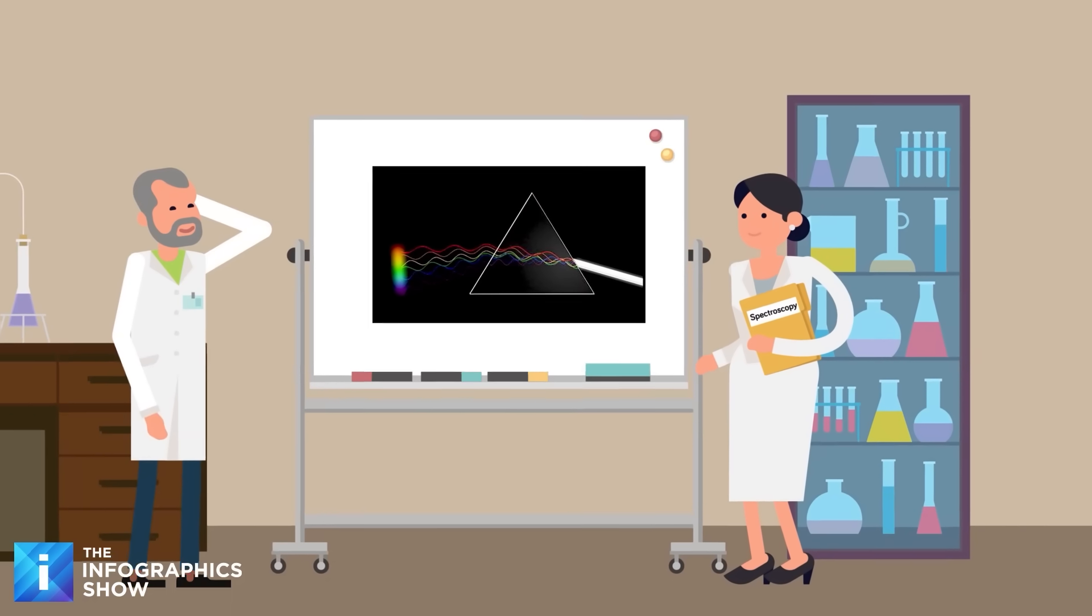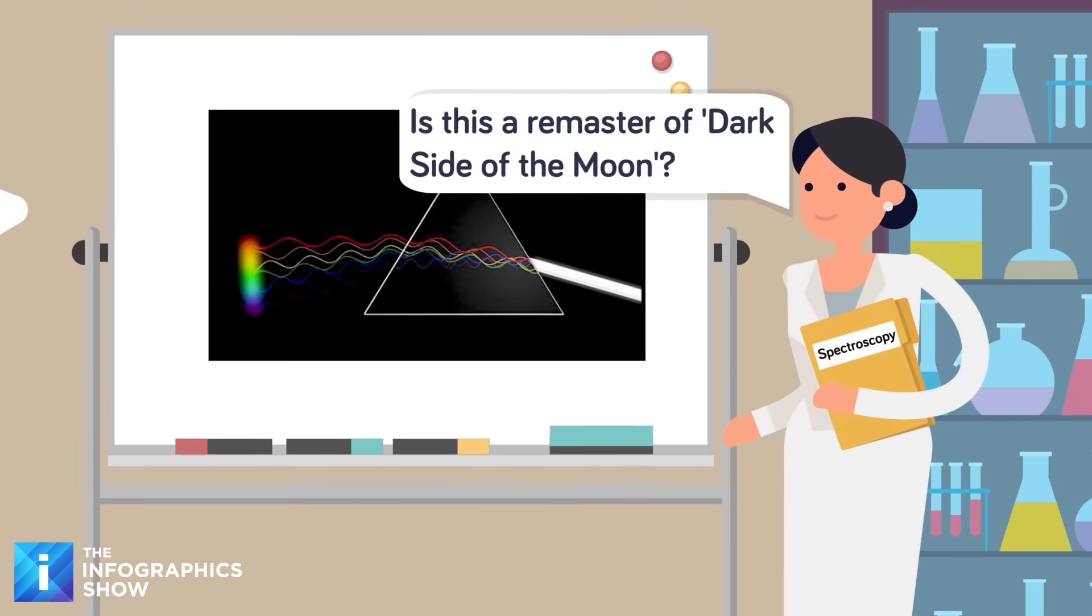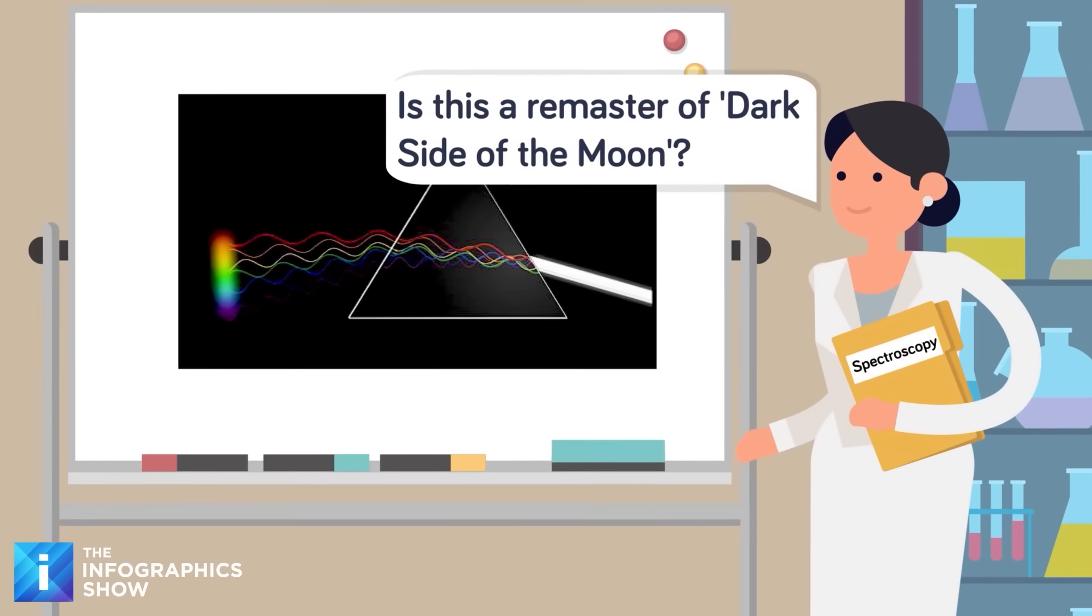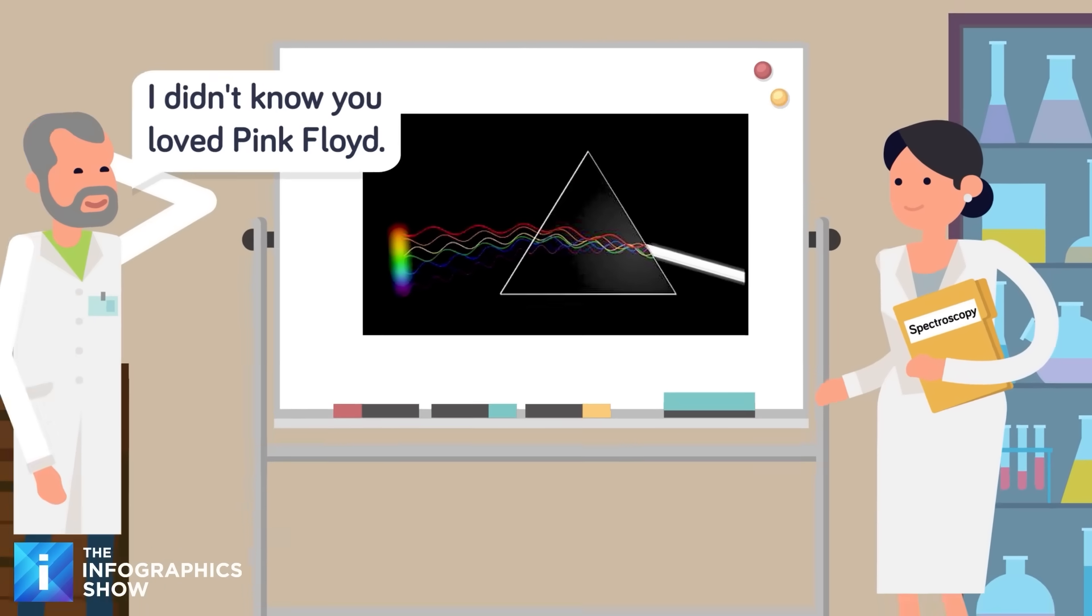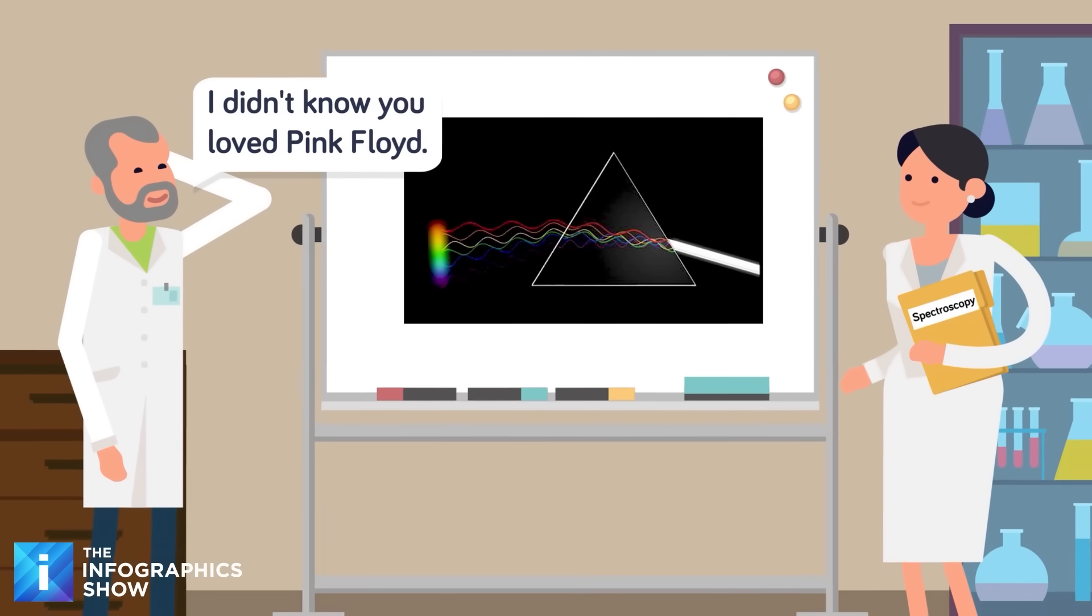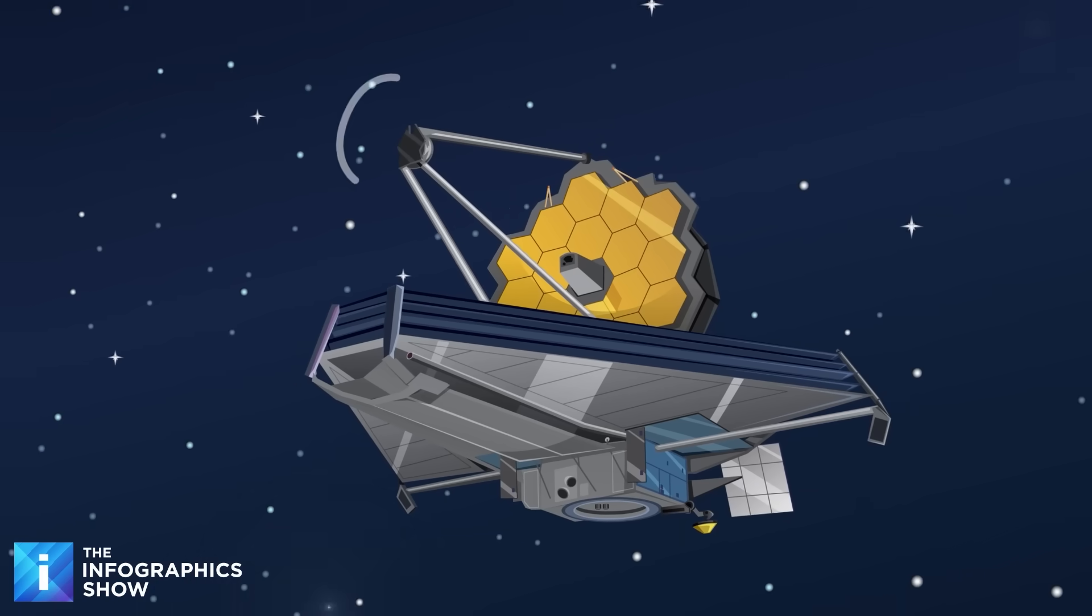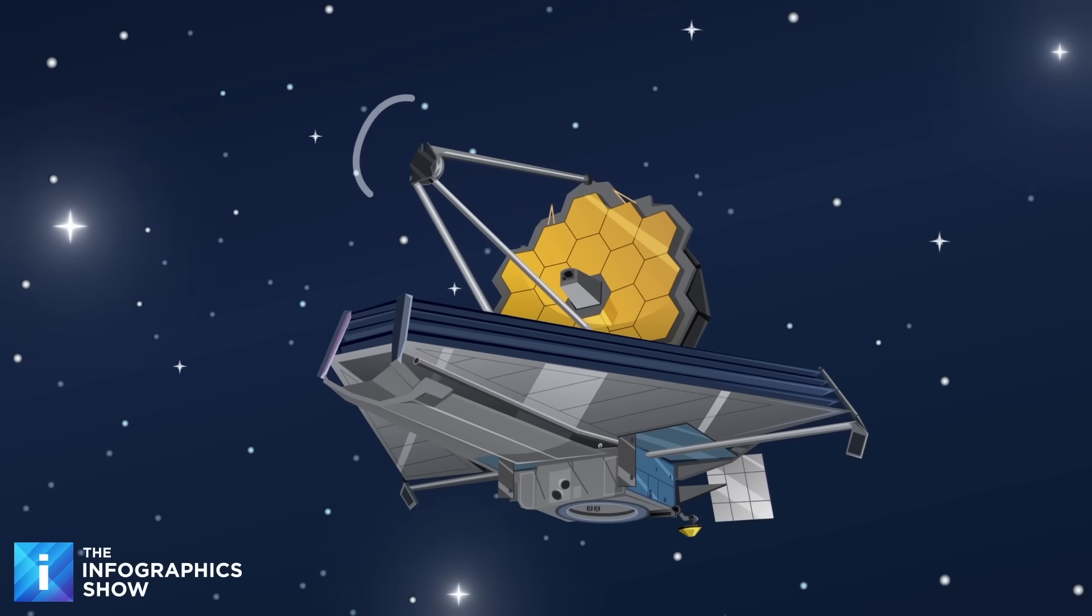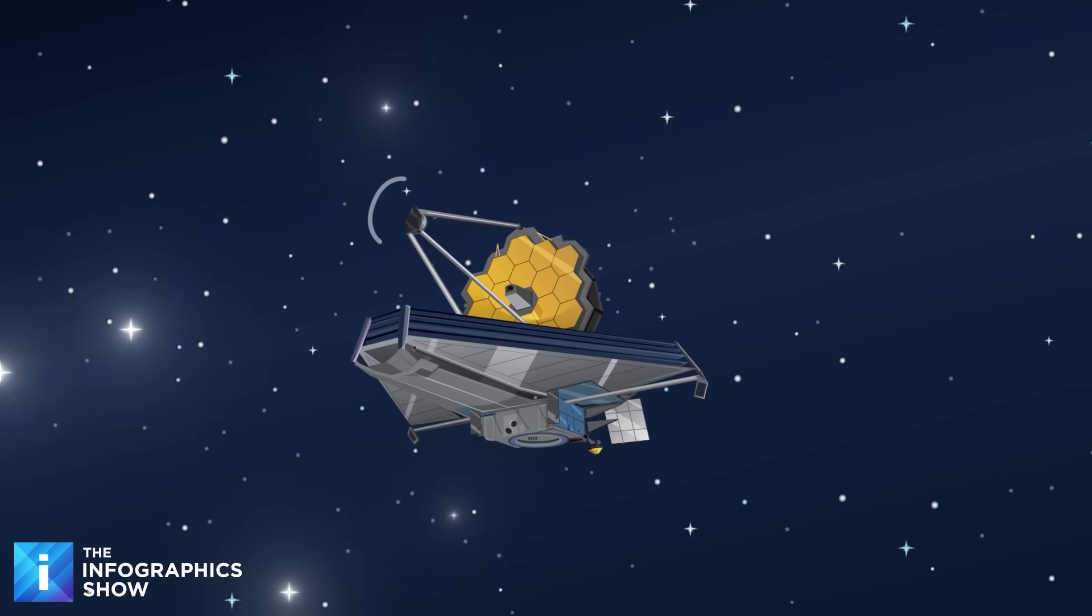Astronomers will further study these exoplanets using spectroscopy, which is the study of absorption and emission of light and other radiation by matter. It involves the splitting of light into its constituent wavelengths, which is done in much the same way as a prism splits light into a rainbow of colors. However, it's only in the last two decades that we've had telescopes, cameras, and computers powerful enough to achieve the detail and precision needed to examine exoplanets.